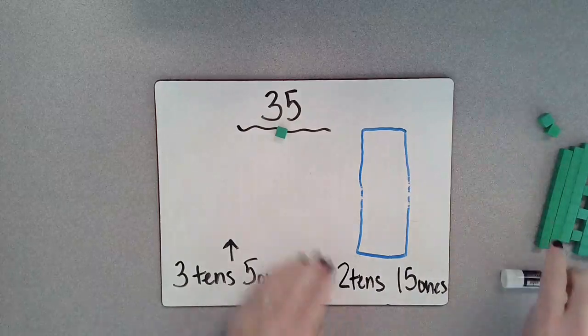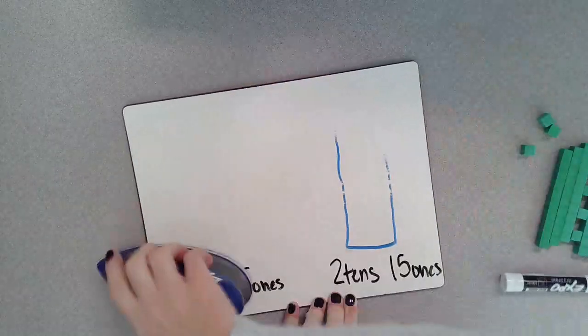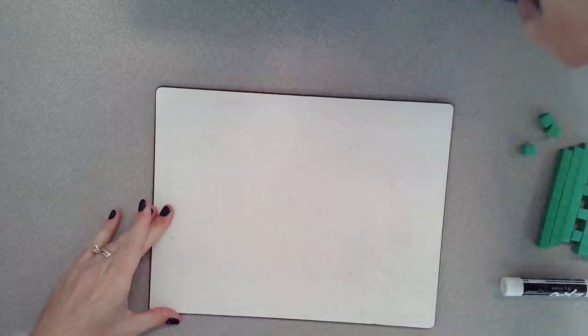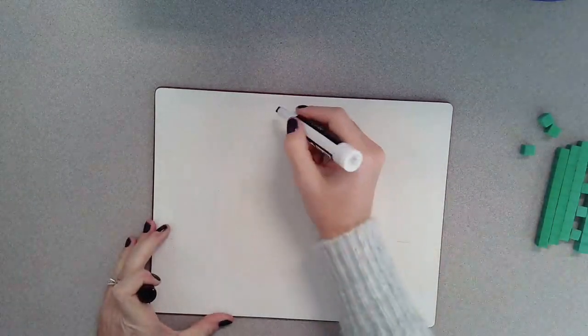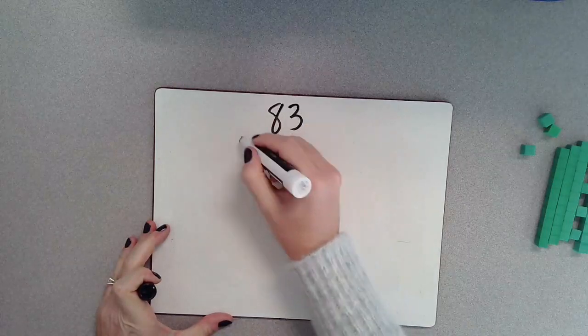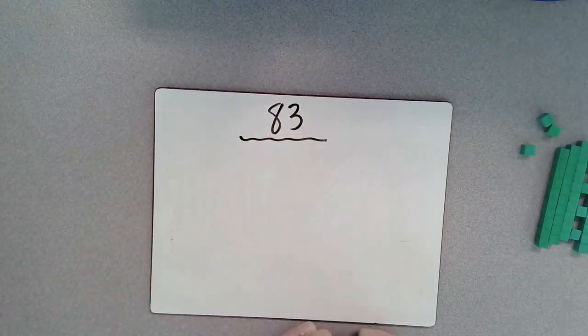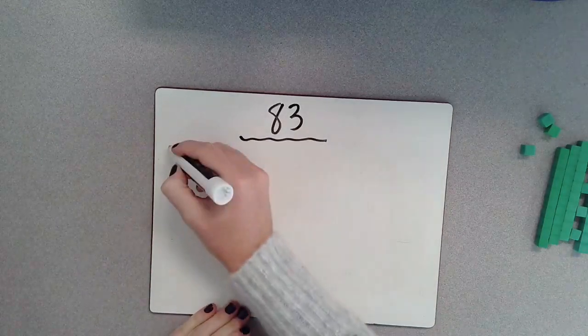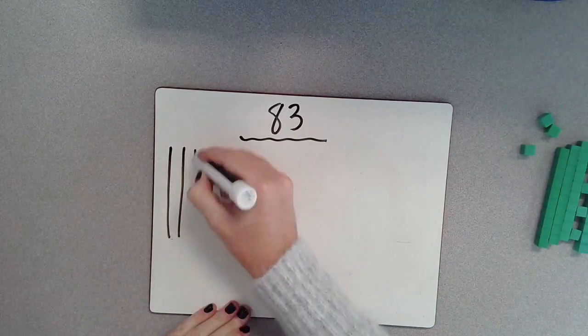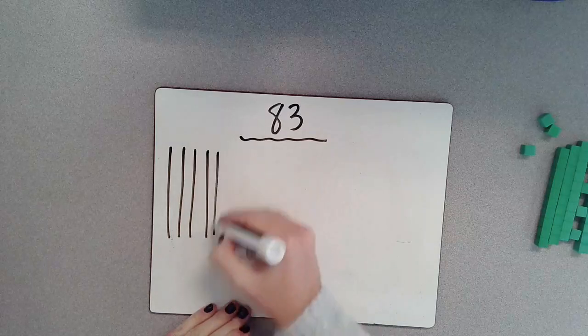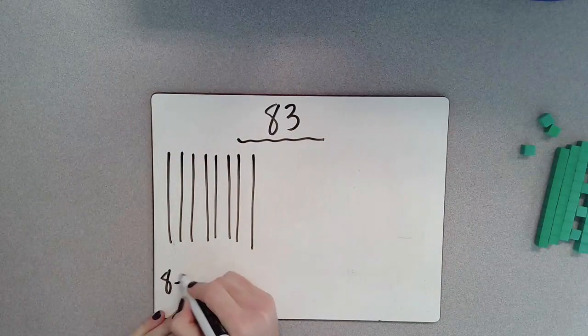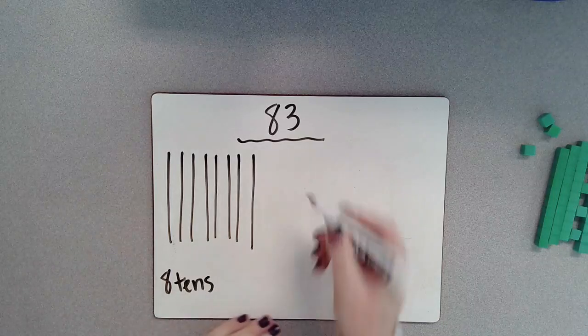This time we're going to be using an even bigger number, and I'm going to be drawing out these place value blocks to help us. So this time our number is 83. One way that we could do it is we could have our eight tens. So one, two, three, four, five, six, seven, eight. So I could do eight tens and then three ones.